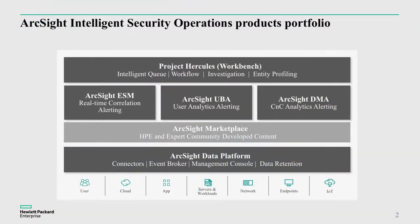I've seen and shown this before with regards to what the various components are, and things have evolved. We've got a new set of capabilities at the top with some new products coming out very shortly. But let's start at the bottom. The ArcSight Data Platform includes what we call smart connectors — the ability to collect data from individual log sources. It's the Event Broker, which distributes that data to multiple applications and systems. It's the management console for centralized management, and it's the data retention capability for compliance use cases — storing data long term.